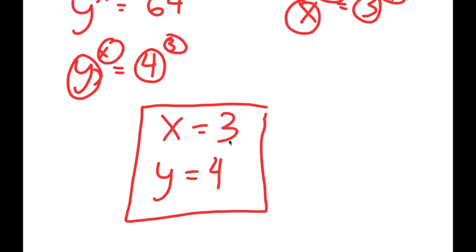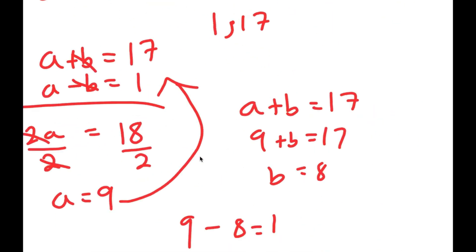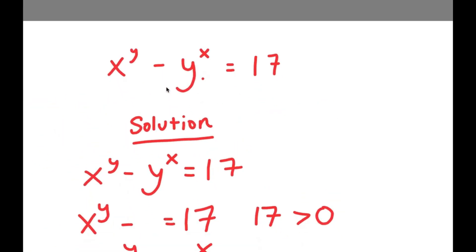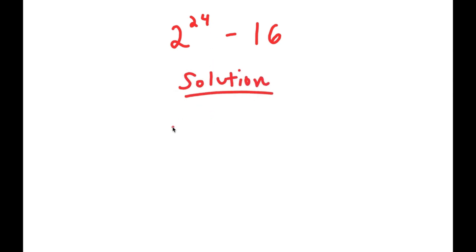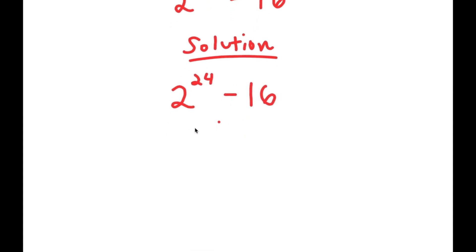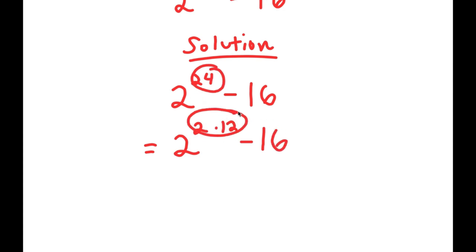So that is my solution to this equation. Now in this next problem, I have 2 to the power of 24 minus 16. To solve this, I'll start by rewriting the problem. So I have 2 to the power of 24 minus 16, and this is the same thing as 2 to the power of 2 times 12 minus 16 — all I did was rewrite 24 as 2 times 12 in my exponent.